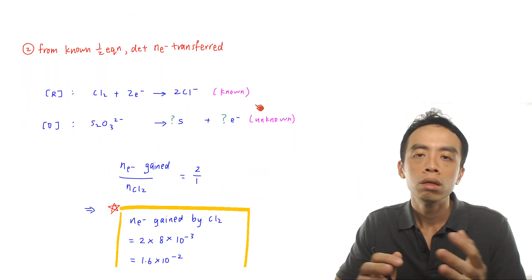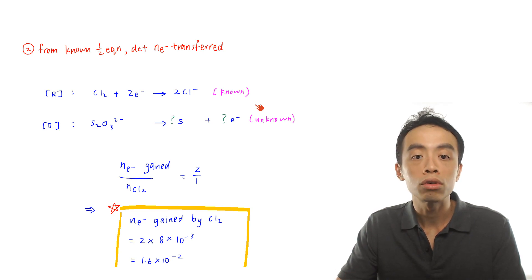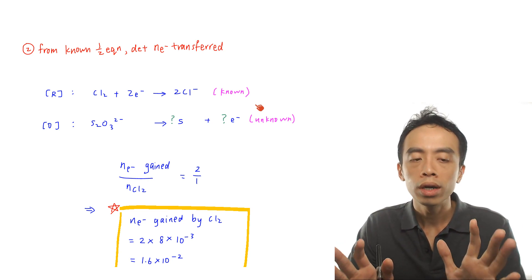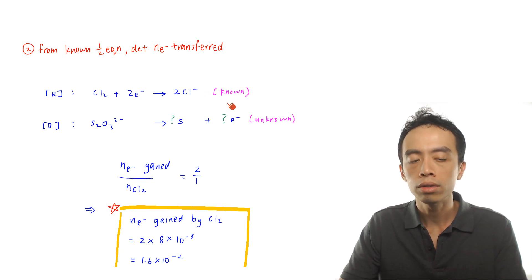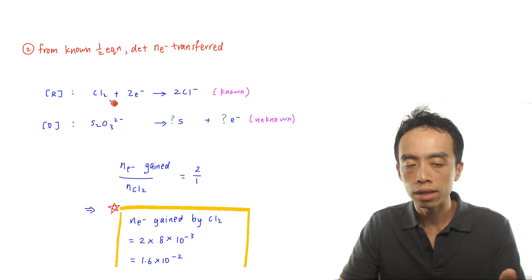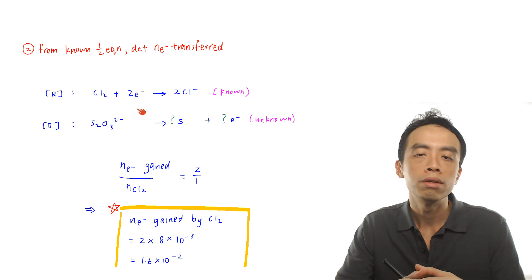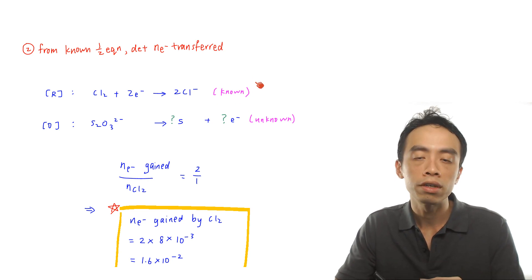Step two is the most important step: using the known half-equation to determine moles of electrons transferred. We know chlorine is reduced to chloride, so the reduction half-equation is: Cl₂ + 2e⁻ → 2Cl⁻. This half-equation is known because we know both the reactant Cl₂ and the product Cl⁻, and we can balance it to see exactly how many electrons are involved.